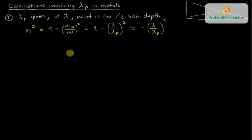So we now have that n squared is equal to this ratio squared, so that immediately tells us that n is approximately equal to i times the ratio with no square.